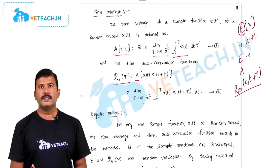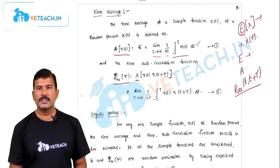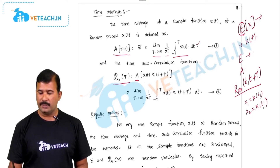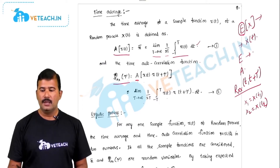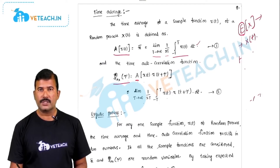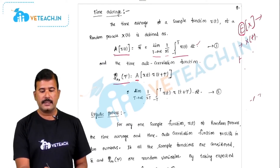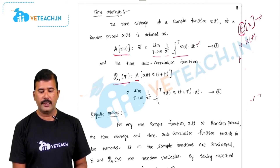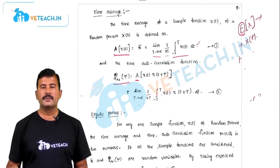There are two ways we can find the average. One is the statistical average for a random process, found by defining random variables x1 = x of t1, x2 = x of t2, and so on, for n random variables defined on a random process at different time instants. The other way is the time average for a sample function. Similar to the statistical autocorrelation function, we can find the time autocorrelation function as: limit t tends to infinity, 1 by 2t, integral from minus t to t of x of t into x of t plus tau d tau.